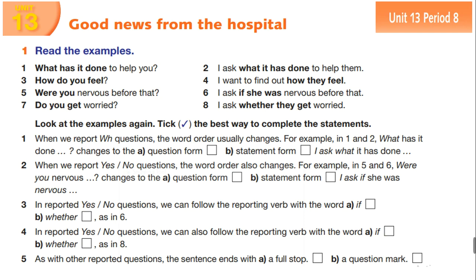Now let's do exercise number one. Number two: 'I ask what it has done to help them?' — 'you' becomes 'them' in reported speech. The WH word 'what' we keep as it is, and 'what has it' becomes 'what it has.' Number three: 'How do you feel?' — He wants to find out how they feel. Number five: 'Were you nervous before that?' Number six: I ask if she was nervous before that — here we have a yes/no question. Number seven, also yes/no question: 'Do you get worried?' — She asked whether they get worried.